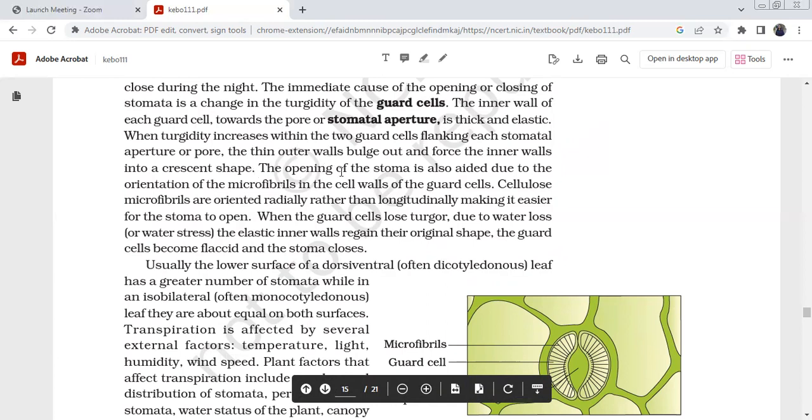the thin outer wall bulges out and forces the inner wall into a crescent shape. If you look at the body of the guard cells, you can see the pressure on the outer wall.